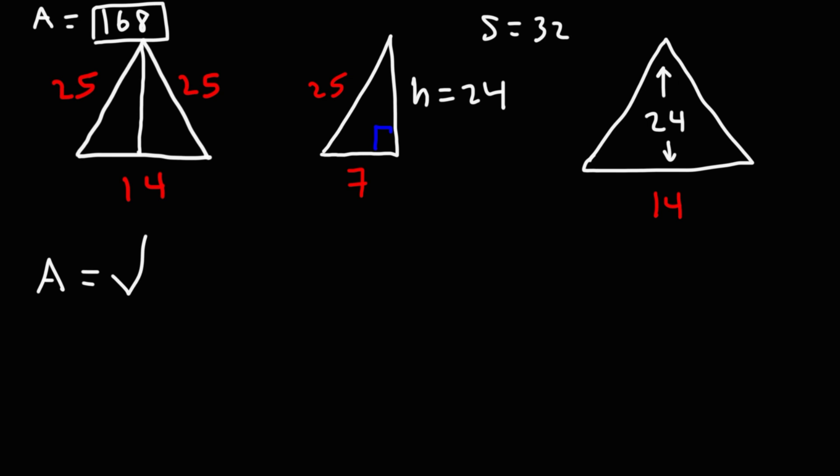25 plus 25 is 50. 50 plus 14 is 64. 1 half of 64 is 32. So, we can say s is 32. Now, the area is going to be the square root of s. And then, s minus a. Let's say 32 minus 14. That's 18. And then, s minus b. 32 minus 25. That's 7. And then, 32 minus the other 25 is 7 as well.